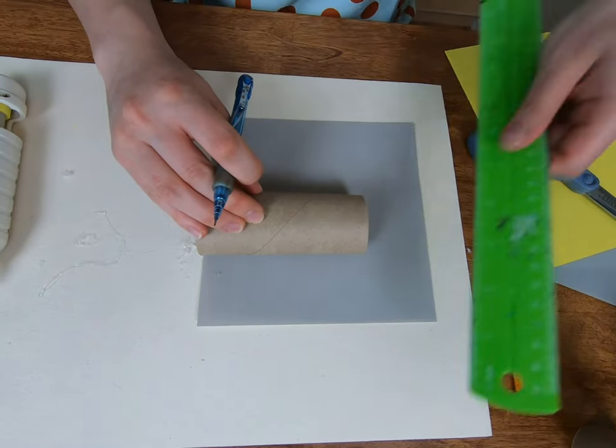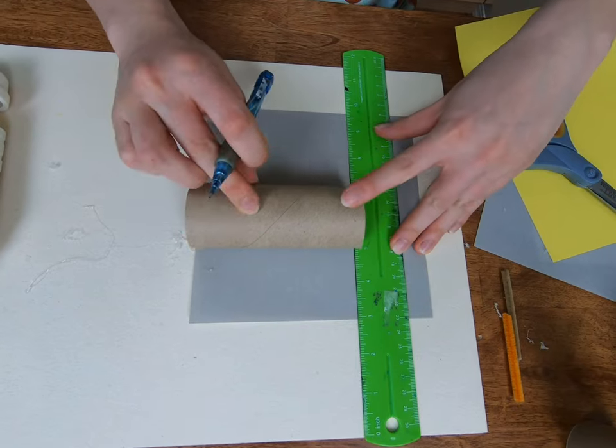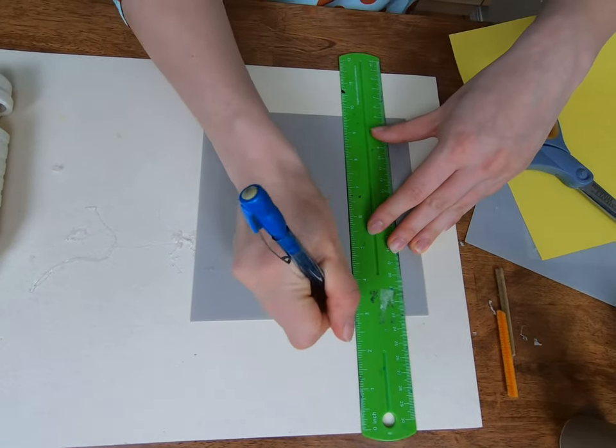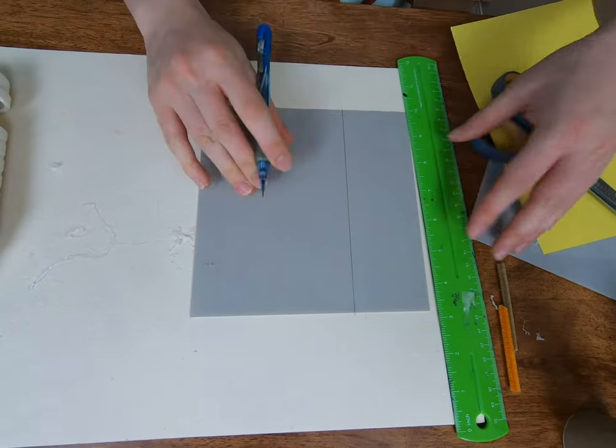Let's cover our paper roll the same way we did for the lion. Line up a ruler, line up your paper roll with the edge of the paper, draw a line, and cut along the line.